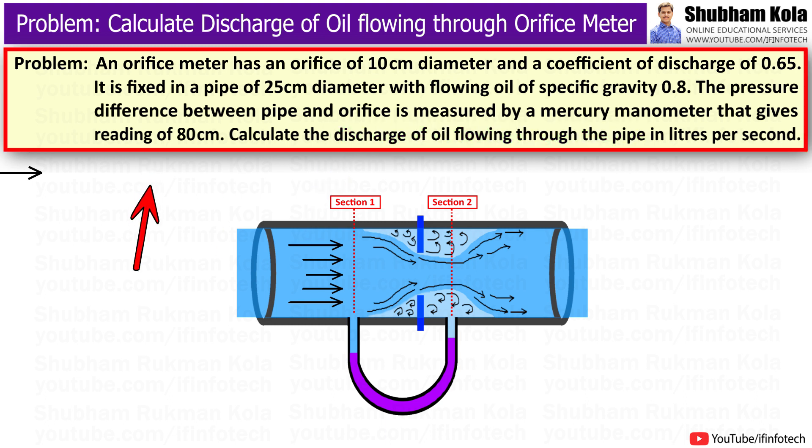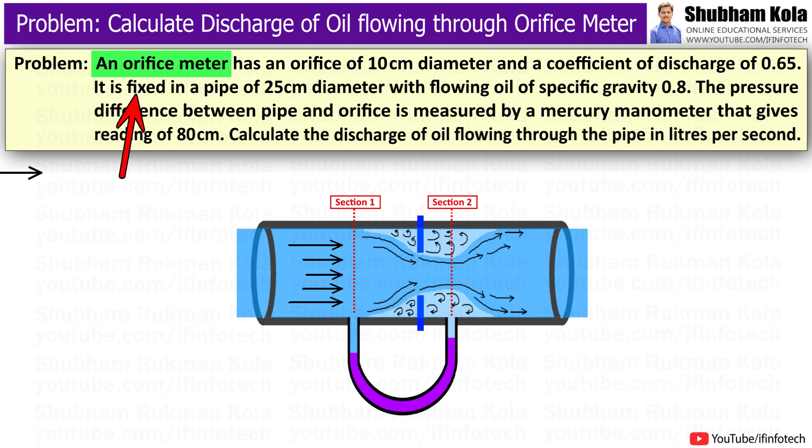The problem statement is: an orifice meter has an orifice of 10 cm diameter and a coefficient of discharge of 0.65. It is fixed in a pipe of 25 cm diameter with flowing oil of specific gravity 0.8. The pressure difference between the pipe and orifice is measured by a mercury manometer that gives reading of 80 cm. Calculate the discharge of oil flowing through the pipe in liters per second.